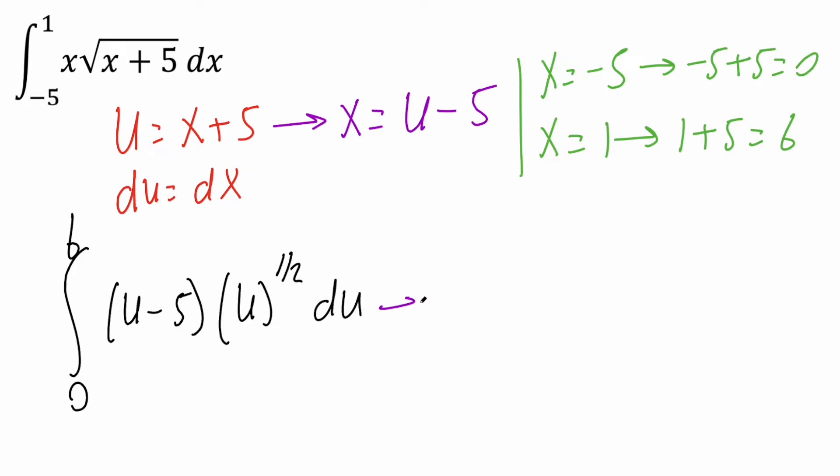Next, we can multiply this out. We're going to get the integral from 0 to 6: u times u^(1/2) is u^(3/2), and -5 times this gives us -5u^(1/2), du.